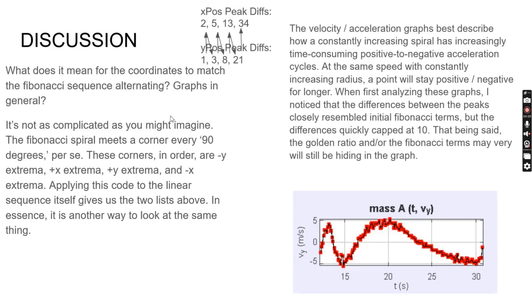It's not as complicated as you might think. Those corners are negative y extrema, plus x extrema, y extrema, and negative x extrema going counterclockwise. Applying that to the linear sequence itself gives you 1, 2, 3, 5, 8, 13, 21, and 34. It's a non-mathematical way of looking at the sequence increasing.